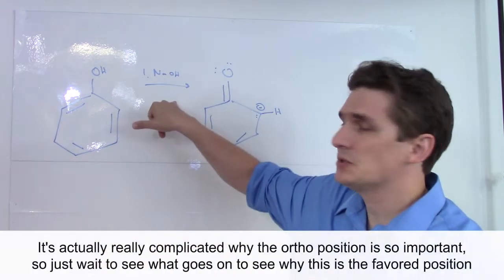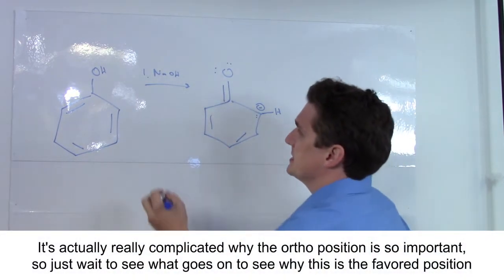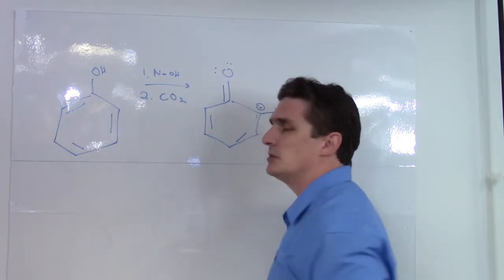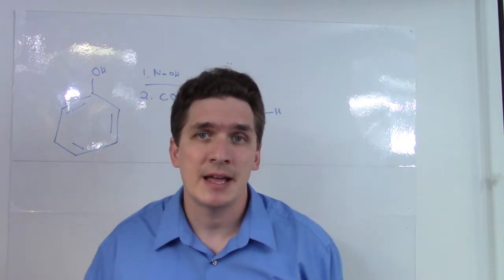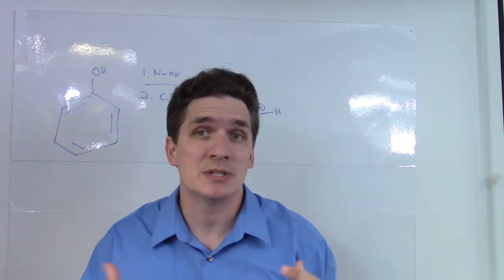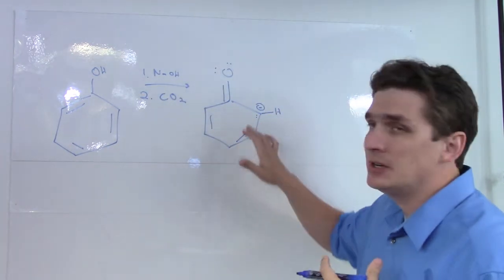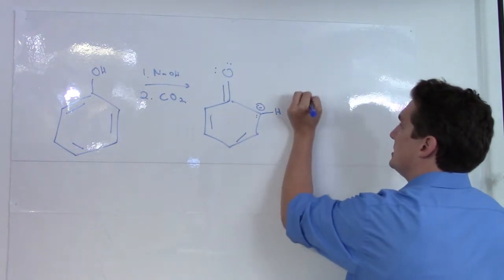So first step, we're going to use a strong base to form the alkoxide. Second step, we're going to introduce carbon dioxide. What carbon dioxide is going to do is it's going to be attacked by what here is a very nucleophilic benzene ring.